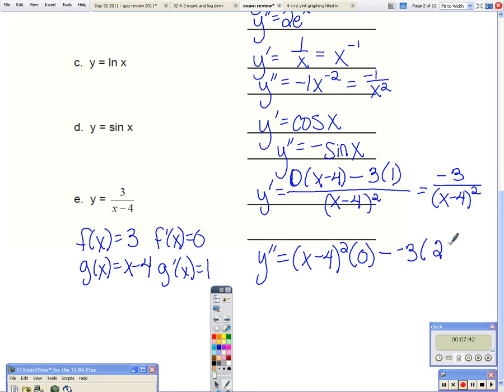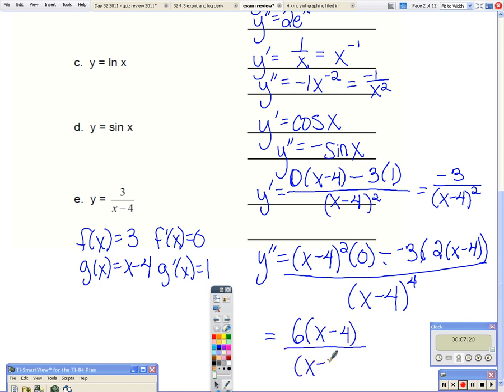So squared squared gives me to the fourth. So simplifying that, the negatives times the negative is positive. So I get 6 times (x minus 4) divided by (x minus 4) to the fourth. And then I can reduce. So my final answer is 6 over (x minus 4) to the third.